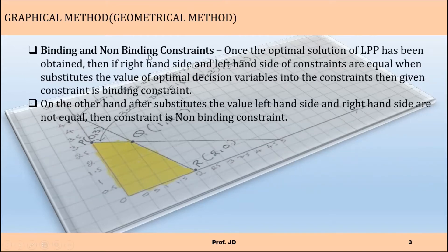Regarding binding and non-binding constraints: once the optimal solution of the LPP has been obtained, if the right-hand side and left-hand side of a constraint are equal when you substitute the values of the optimal decision variables, then that constraint is a binding constraint. If the left-hand side and right-hand side are not equal, then the constraint is a non-binding constraint.